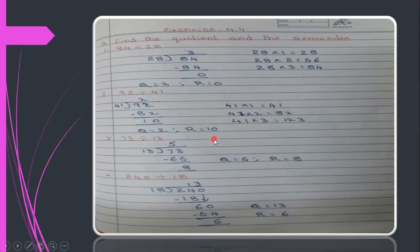Next, 73 divided by 13. Smaller number outside, bigger number inside. You know the 13 table — 13×5=65, and 73 minus 65 is 8. So quotient is 5 and remainder is 8.